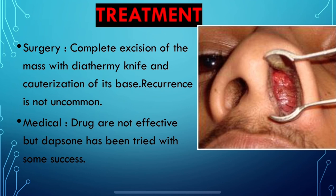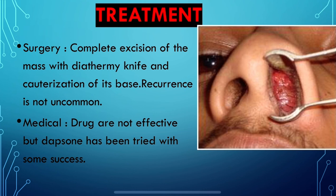Treatment is surgical. The complete excision of the mass is performed with a diathermy knife, followed by cauterization of its base. The diathermy knife has a water jet function enabling injection into the submucosal area, allowing immediate clean-up after cutting. Cauterization burns off the remaining tissue and blood vessels for complete cure.